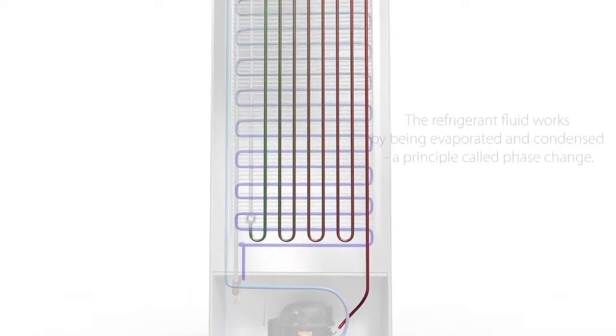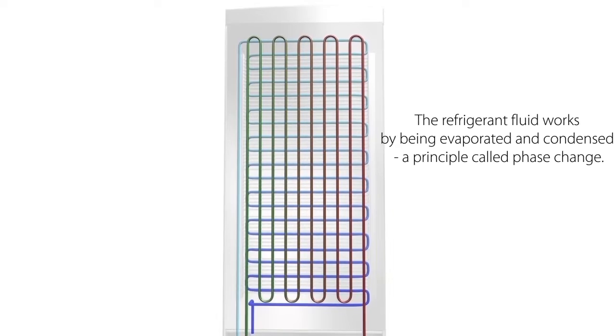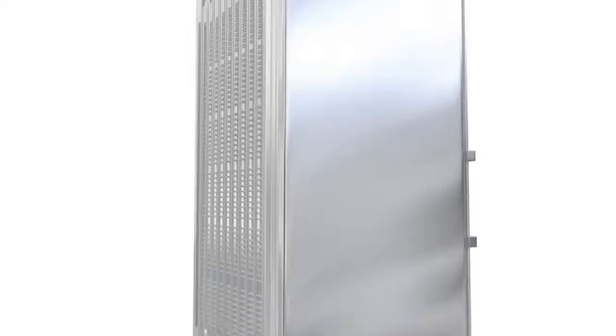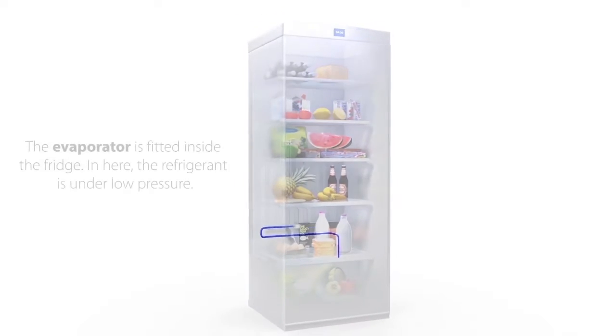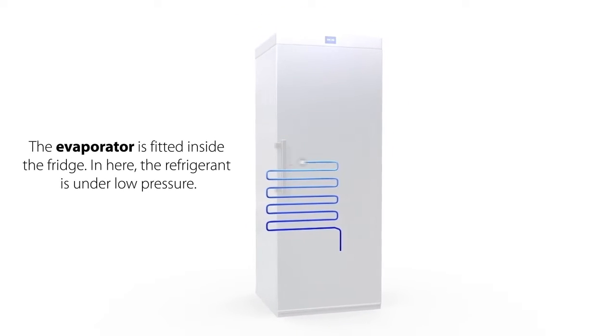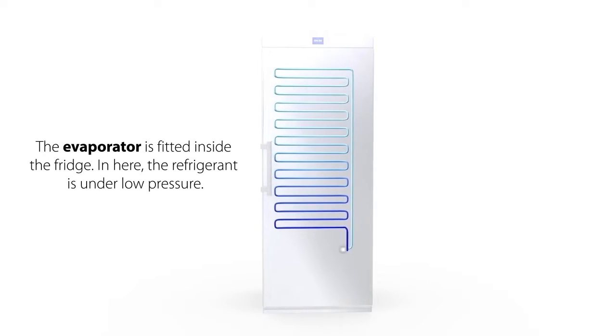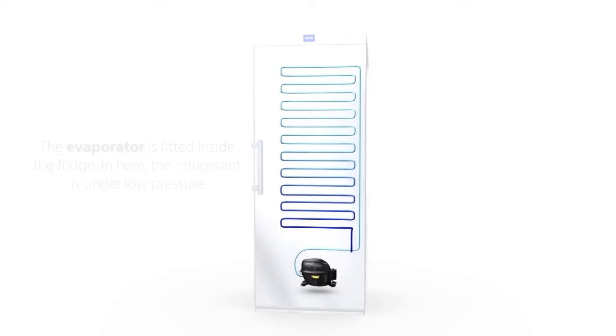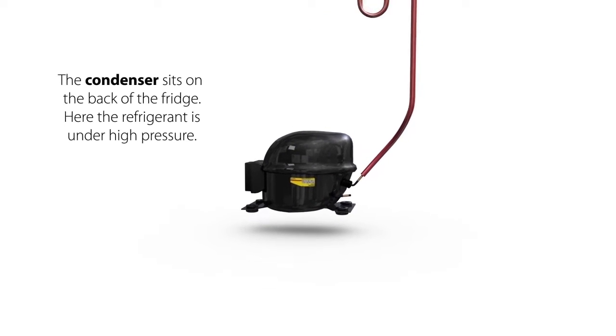The refrigerant fluid works by being evaporated and condensed, a principle called phase change. The evaporator is fitted inside the fridge; in here, the refrigerant is under low pressure. The condenser sits on the back of the fridge; here, the refrigerant is under high pressure.